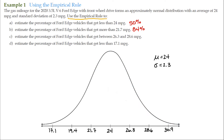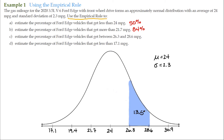Letter C: estimate the percentage of Ford Edge vehicles that get between 26.3 and 28.6 miles per gallon. Here's 26.3 and here's 28.6 — we're just talking about this little area, this proportion right in here. From 26.3 to 28.6, using the empirical rule, that's 13.5%. The answer is 13.5%.